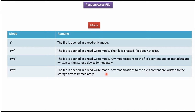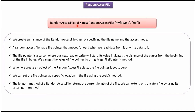Here I am creating a Random Access File object using the Random Access File constructor which accepts a file name and access mode. Random Access File has a file pointer that moves forward when we read data from it or write data to it. When we create an object of Random Access File, the file pointer will be at the 0th position. Using the seek method, we can move the file pointer to a specific location or position.